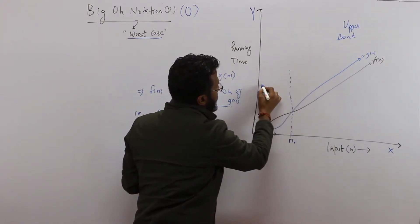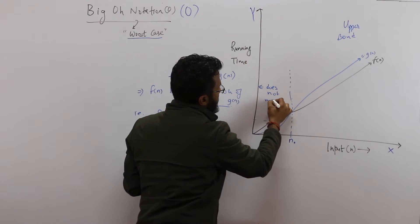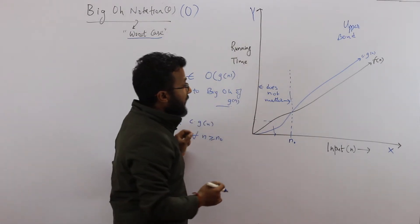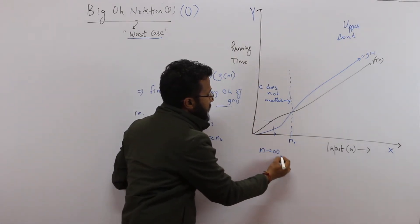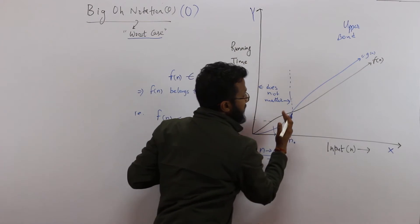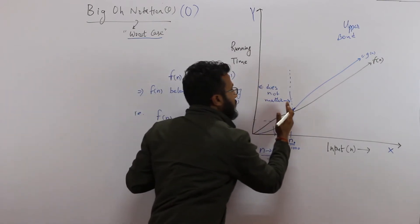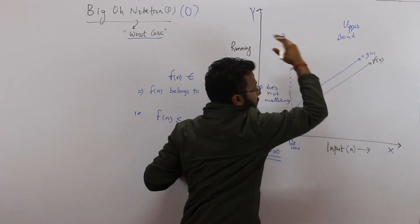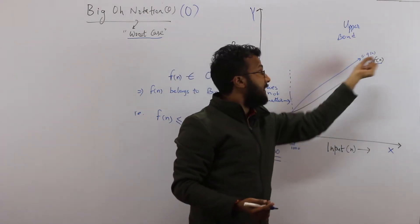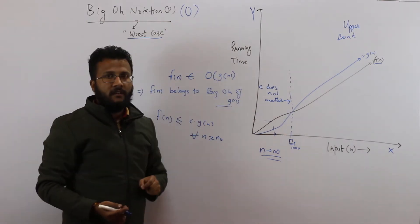For all values of n less than n₀, we don't know — and it does not matter to us. This part does not matter, because whenever we talk about the time complexity of an algorithm, we are trying to see how the algorithm behaves when n is very large or n is tending to infinity. After the value n₀ — which can be 1000, 10,000, whatever — the algorithm's time complexity fn is always upper bounded by c times gn. If this holds, then fn is Big O of gn. This is the definition of Big O notation.